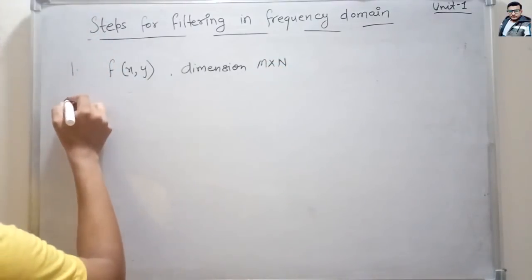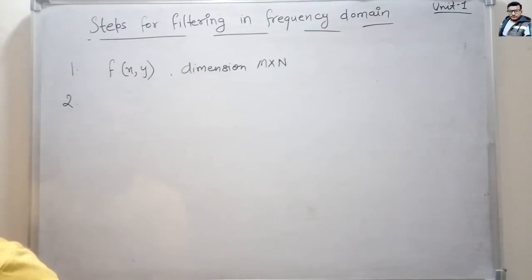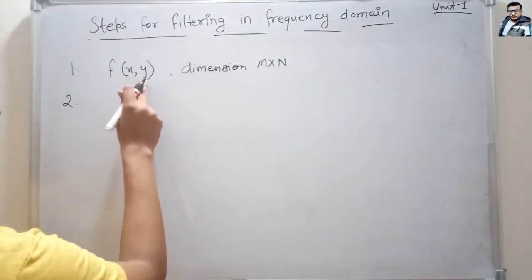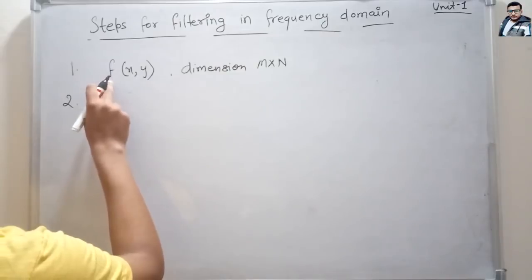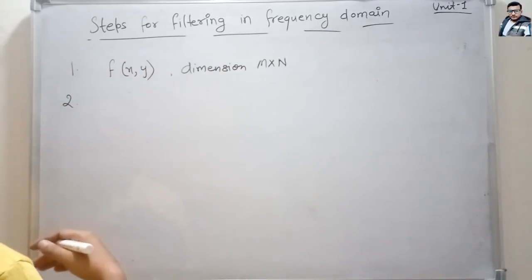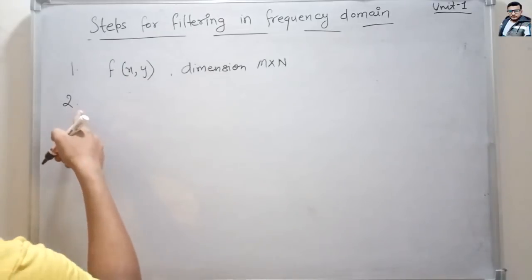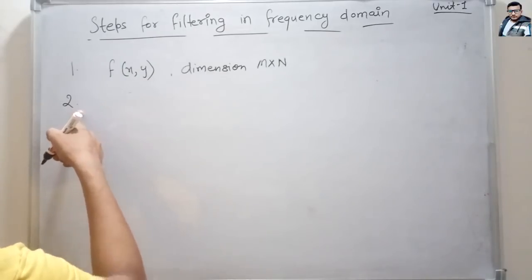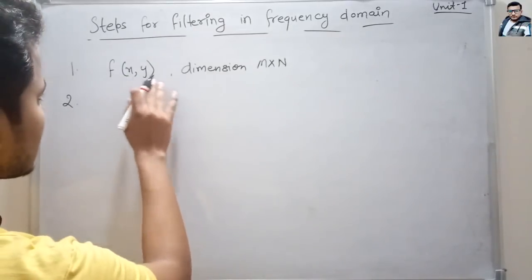This is our image f(x, y), where x and y are the coordinates and f represents the intensities of these coordinates or pixels. The second step is we will pad this image.